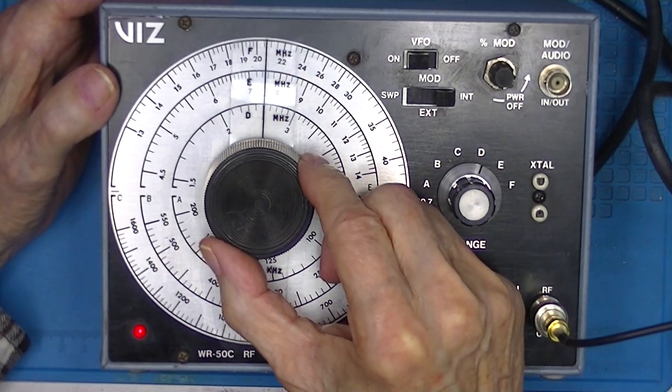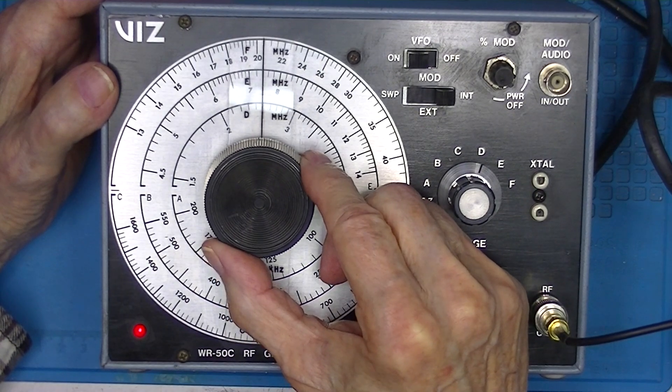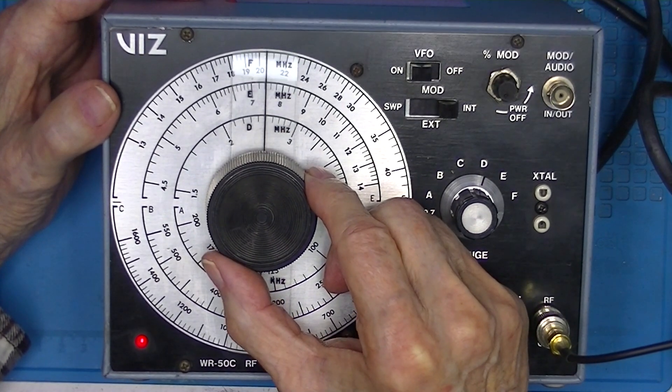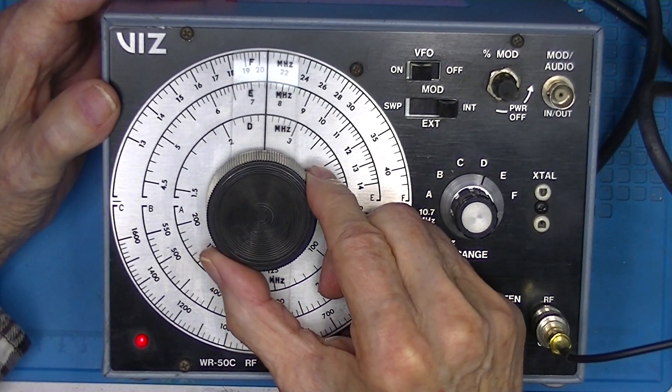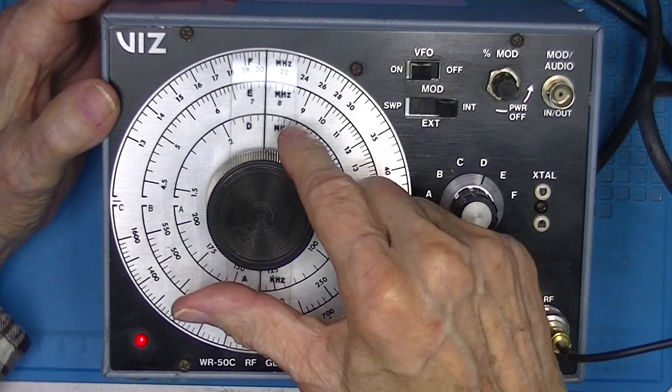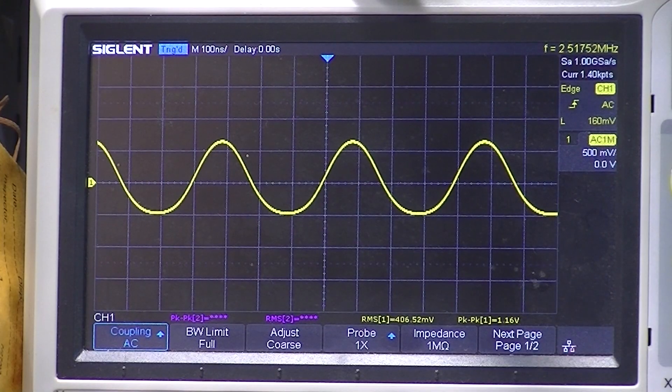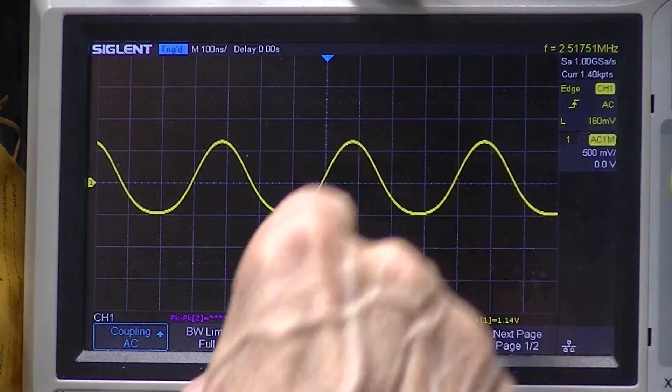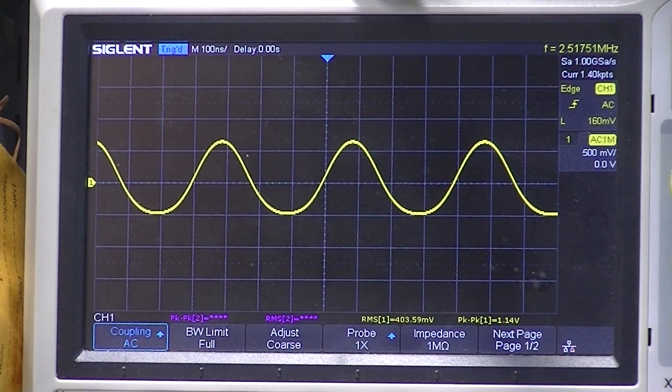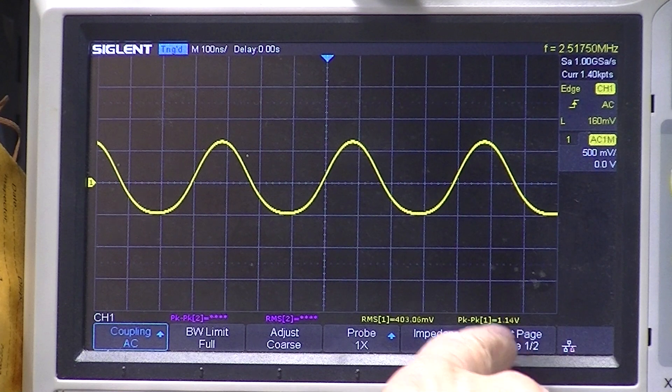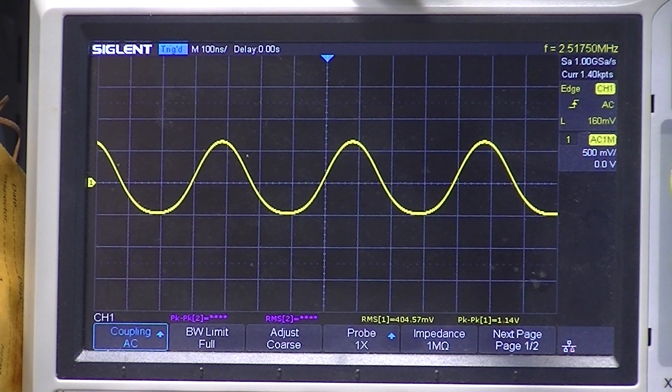I'll go to band D. And this is 2.5 megahertz, which is right there. 2.517 and 1.16 peak to peak.